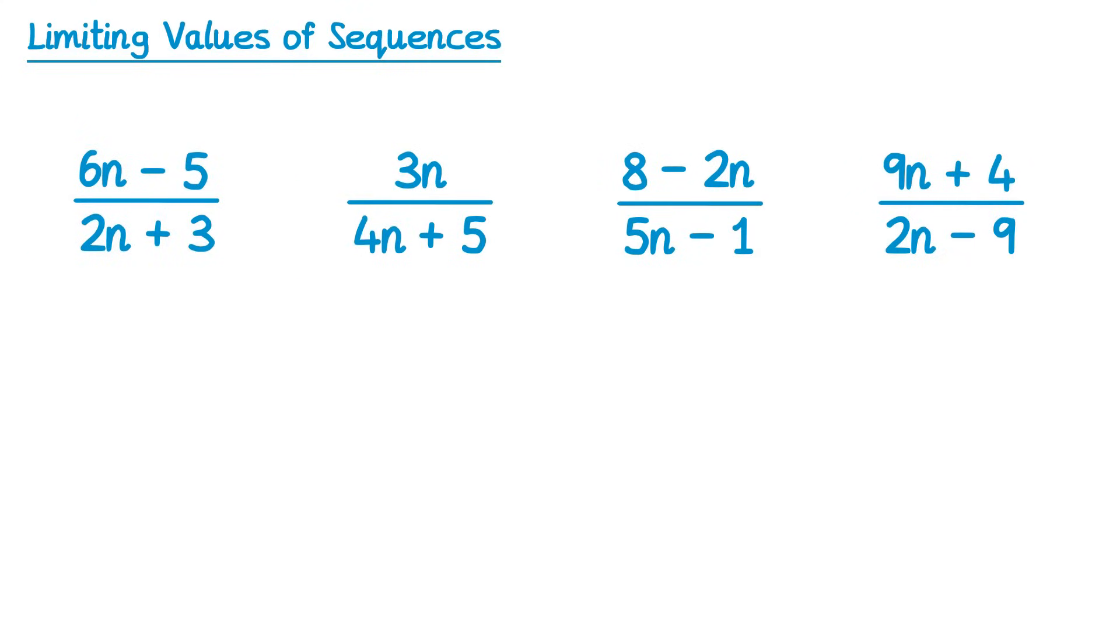Now let's try and find the limiting values for these sequences. So in this first one, what you're looking for is the terms that don't have n in them, just this negative 5 and this positive 3. They're the terms that will become less significant as we make n larger. So if we ignore those, we end up with 6n over 2n, and then if we cancel out the n's, we end up with 6 over 2, which is 3. So the limit of this sequence as n tends towards infinity is 3.